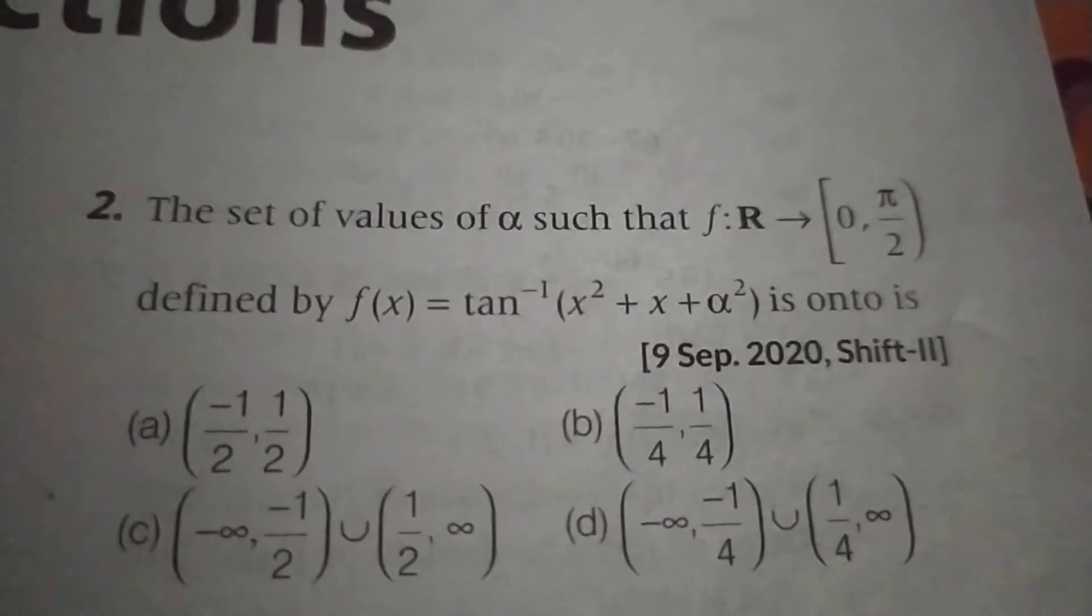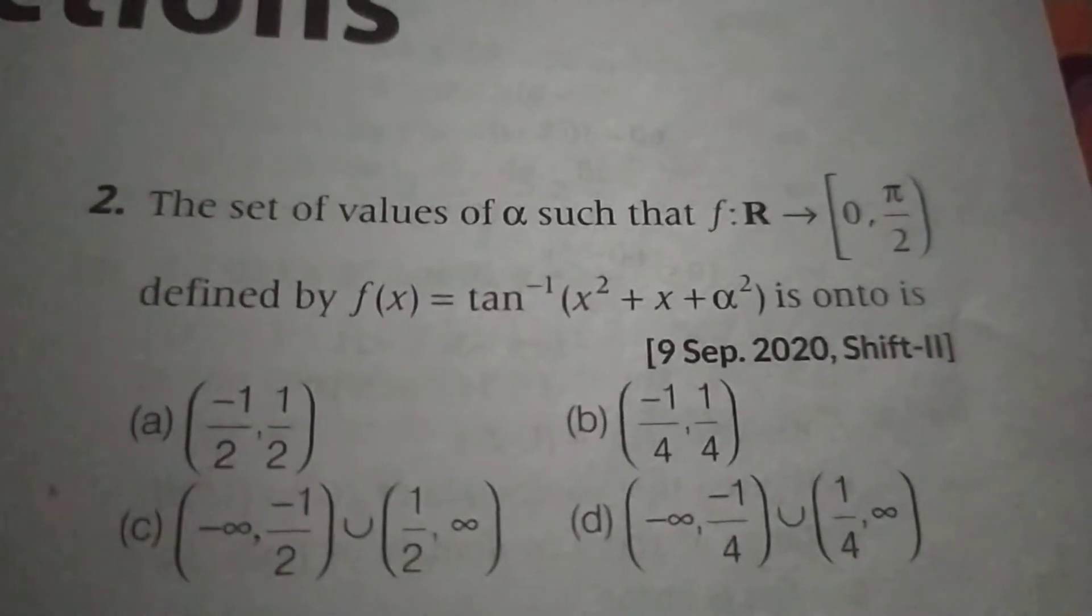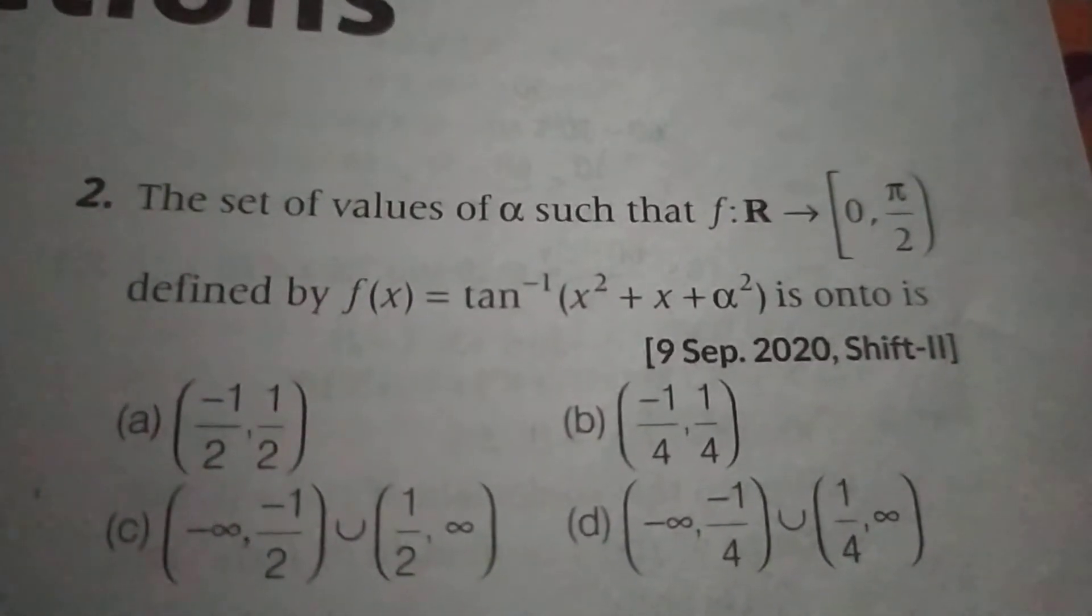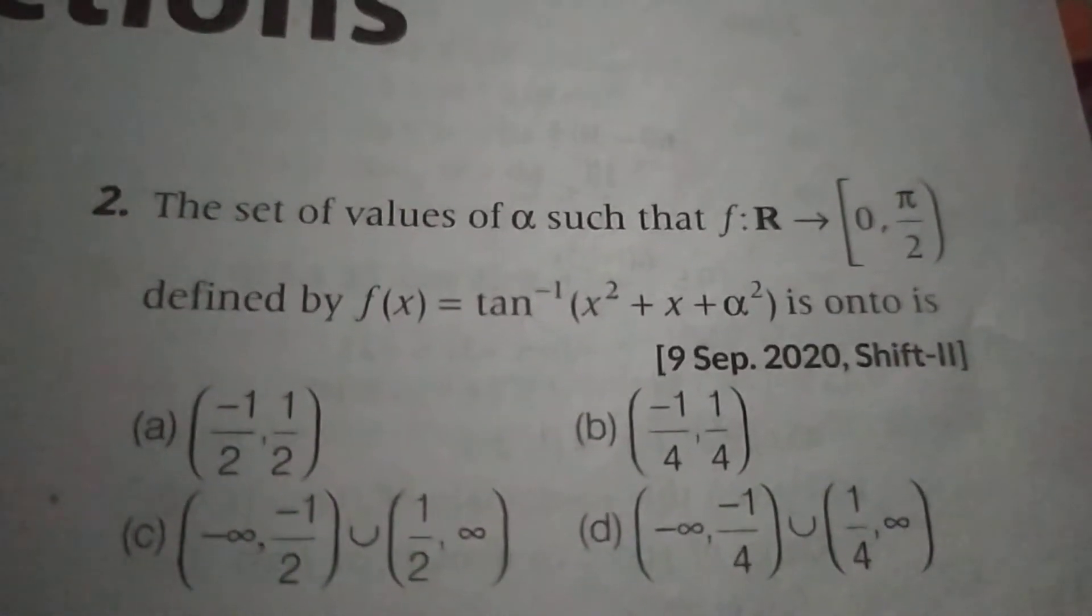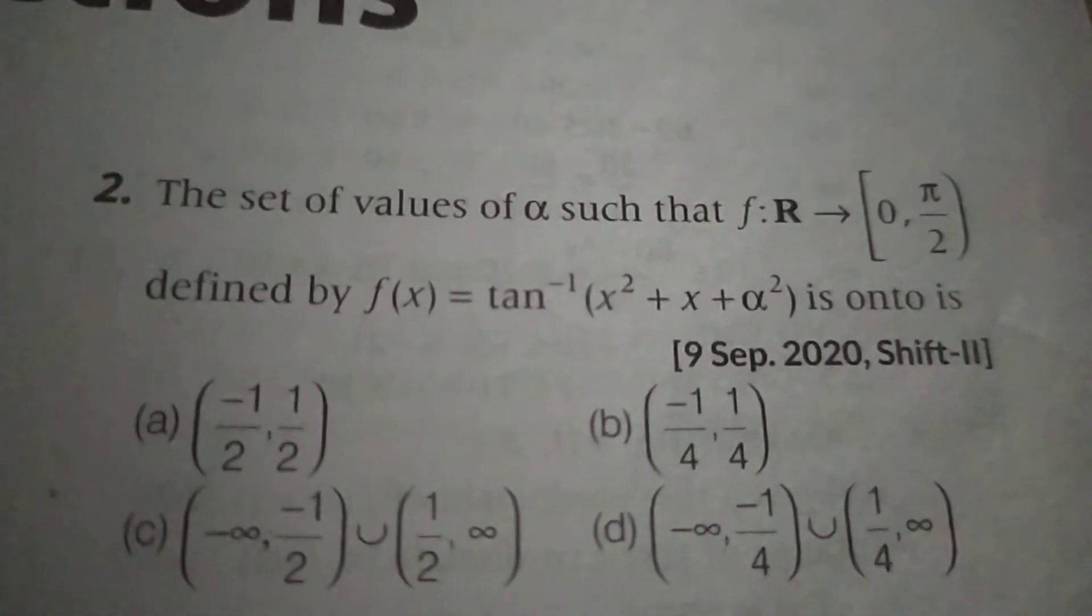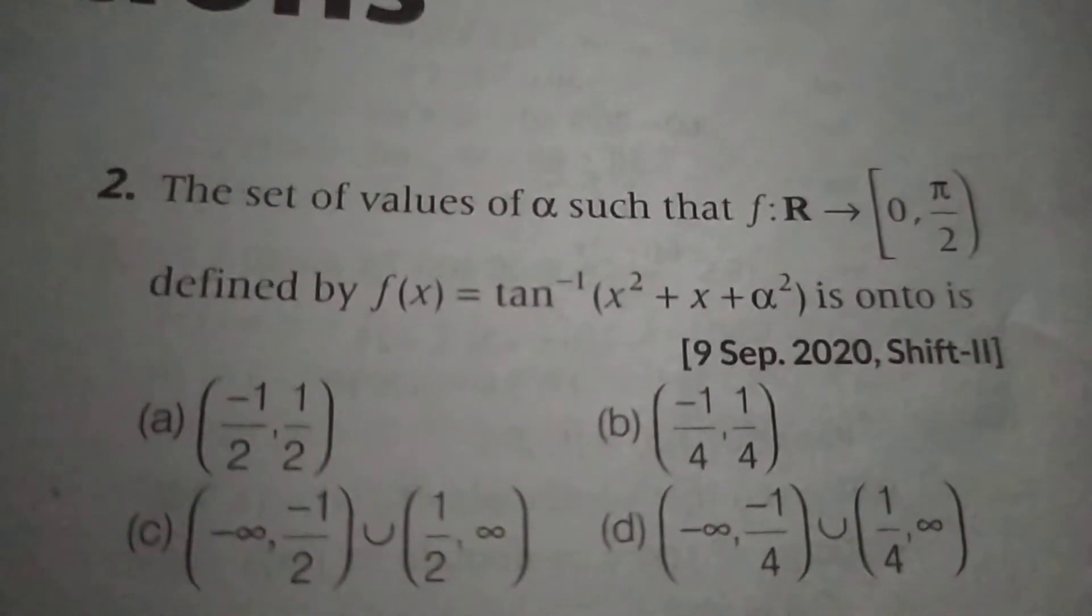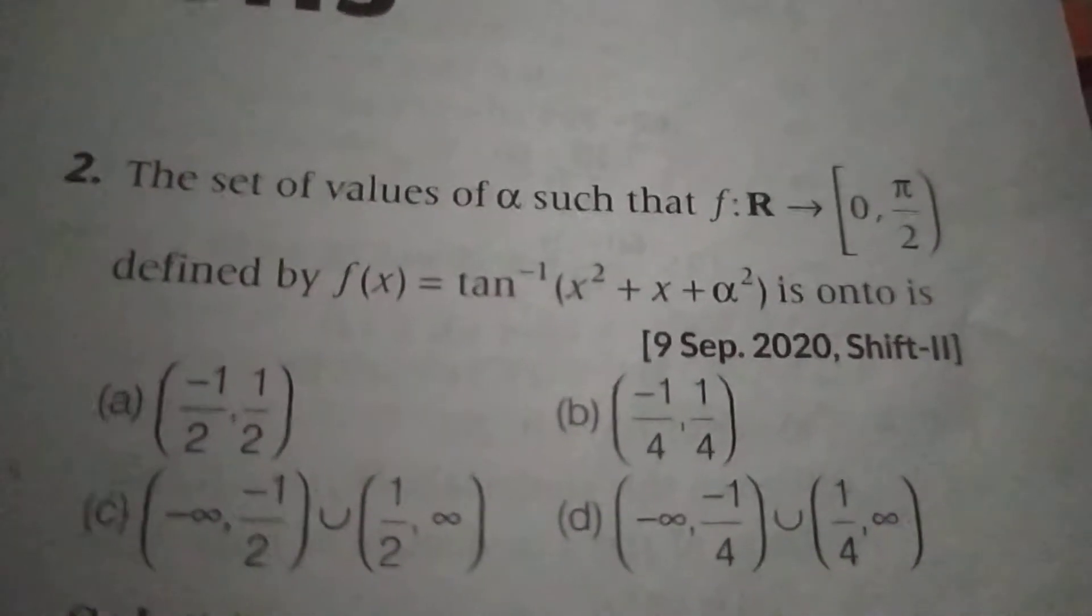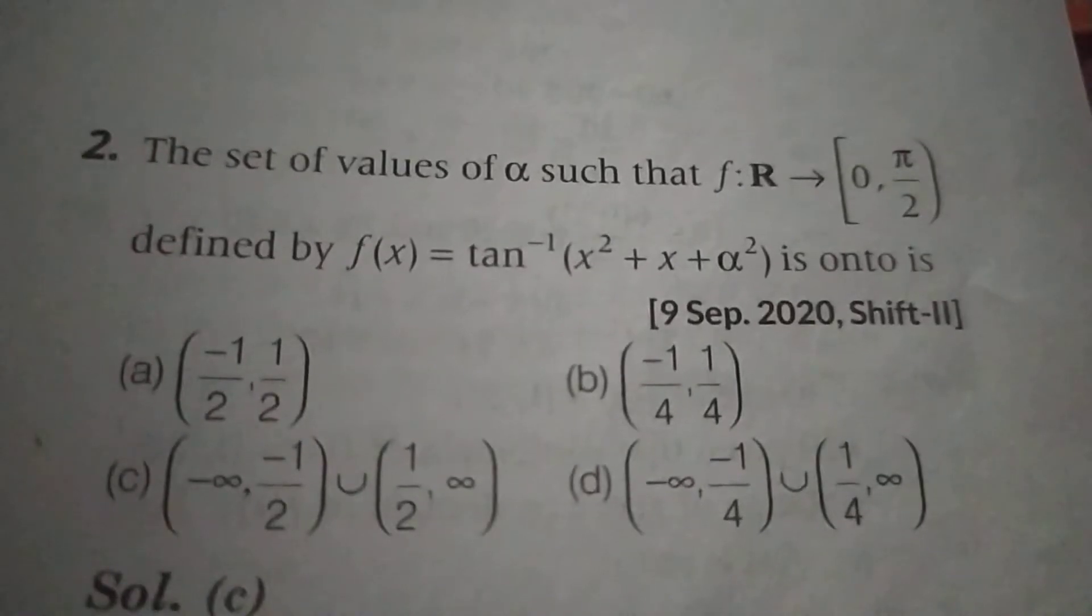Next, second question. This is 9th September 2020 shift two. The set of all values of α such that f: R → [0, π/2) defined by f(x) = tan⁻¹(x² + x + α²) is onto.